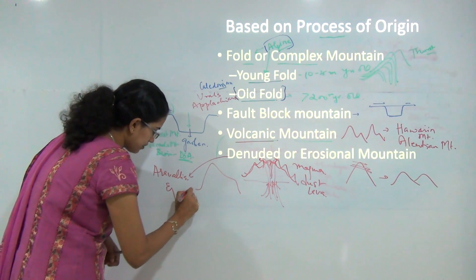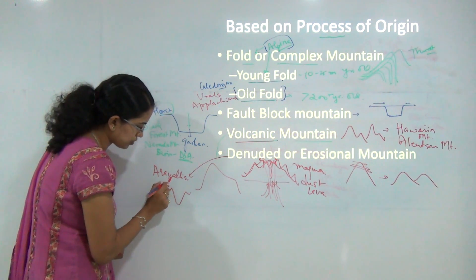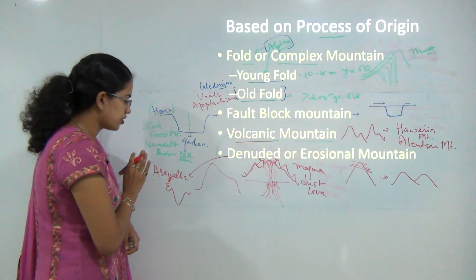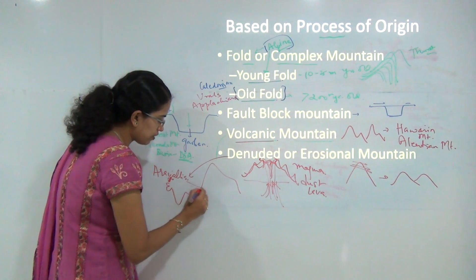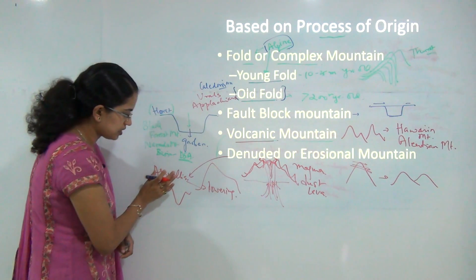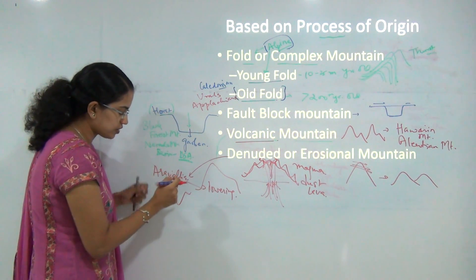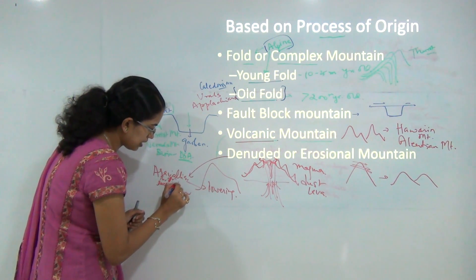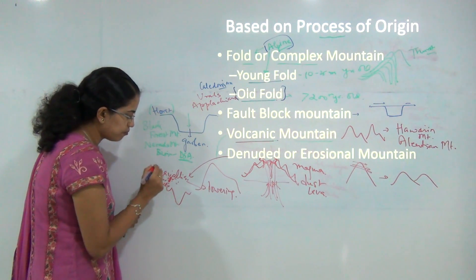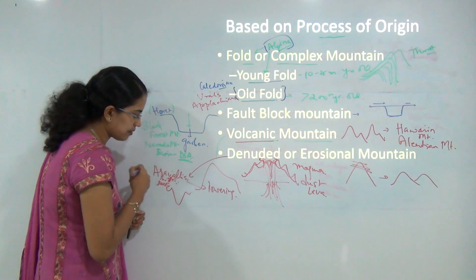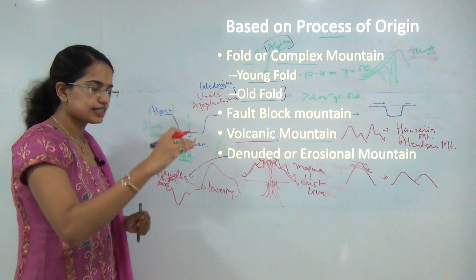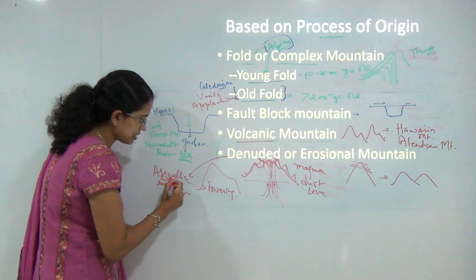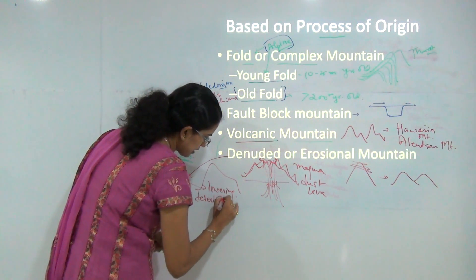The Aravalli ranges run north to south from Gujarat to New Delhi, and these ranges have been denuded or eroded over time, resulting in a lowering of height. An important impact of this is that the region to the west of the Aravallis is the Thar Desert, and to the east is a more fertile area. Due to the lowering of the Aravallis' height, desertification is moving from west to east, as sand dunes now pass through the reduced barrier.